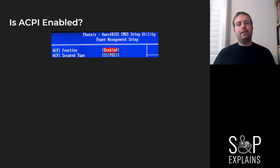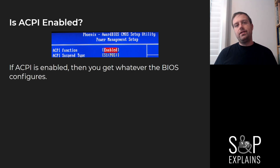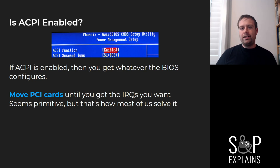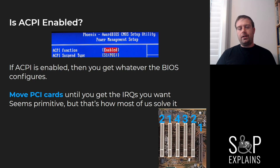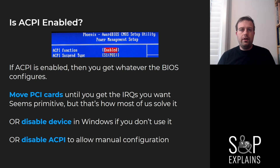What do you do about IRQ conflicts? That depends on your system. If you have ACPI enabled in your BIOS, you have a problem because you can't change what the BIOS configures. In this situation you really only have a few options. The first option, which sounds very primitive but is quite effective, is to move PCI cards — the address lines are shifted for each PCI slot. You can also disable a device in Windows if you don't need something like a FireWire port. Or you can disable ACPI, and that will give you manual configuration.